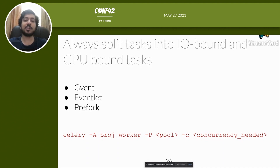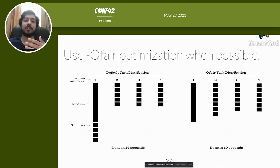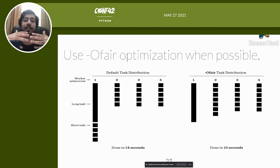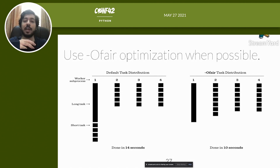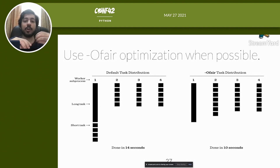Setting up the prefork pool is easy — just pass the pool name and desired concurrency in the command and you'll spin up a new worker with the provided configuration. Also use ofair optimization when possible. The default approach Celery uses is round-robin to distribute tasks. If tasks take varying amounts of time to complete, this causes unexpected delays as tasks queue at some workers while others are idle. Ofair optimization distributes tasks according to worker availability instead of number of workers, resulting in more predictable behavior for tasks with varying execution times.